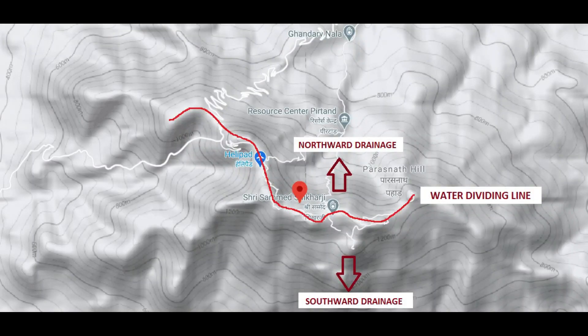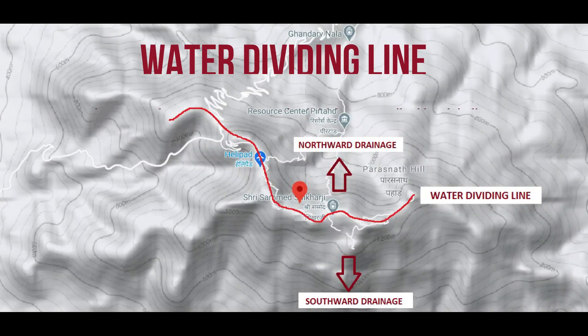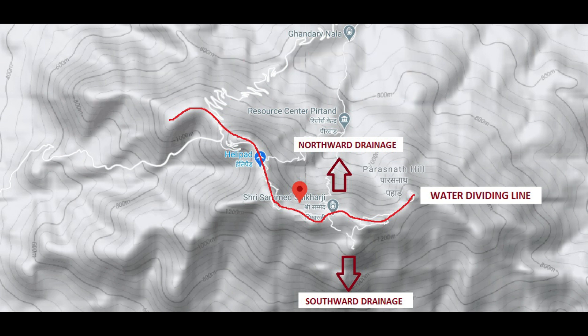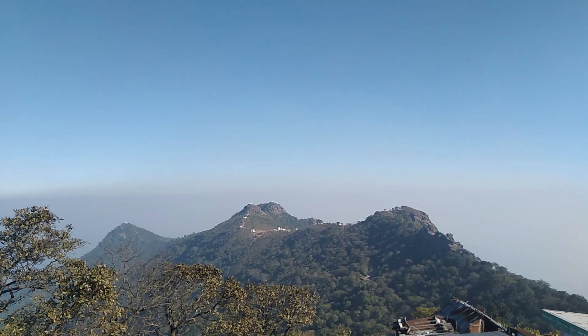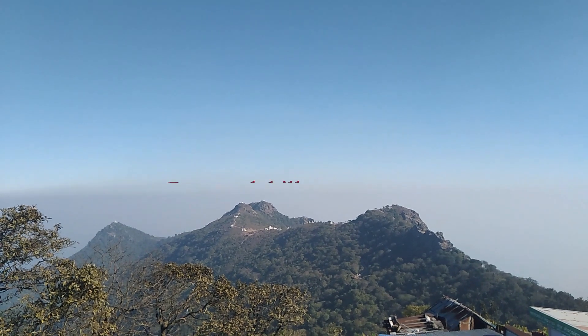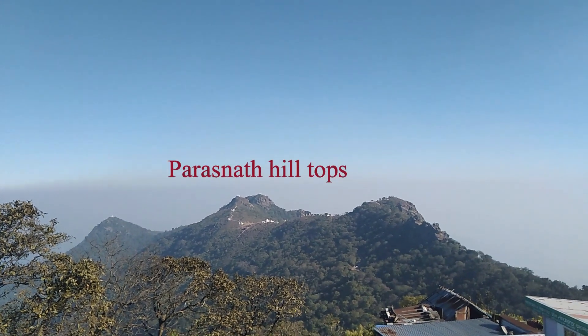A line which separates two adjacent drainage basins is known as a water divide. It is often marked by an elevated area such as a mountain or a plateau. Precipitation on either side of the line travels in different or opposing directions. It is the separation between neighboring water basins.